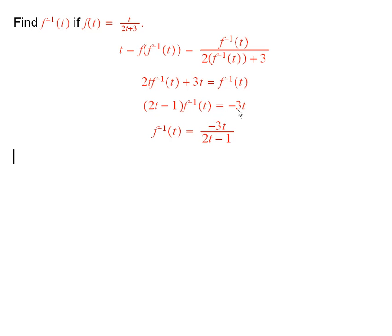And then we'll take the 3t over to the other side and divide by 2t minus 1. So the inverse function is given by this formula right here.